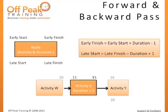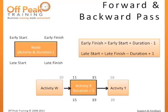Likewise, late start represents the latest an activity can start without affecting the planned project finish date. Late finish will be the end of the day prior to the earliest late start of its successors. In our example, the late finish of activity X's successor is the beginning of the 20th day, so activity X must be completed no later than the end of the 19th day. Late start can be calculated by subtracting the duration from the late finish and adding 1. In this example, we take 19 minus 5 and add 1, which gives us 15. Looking at activity X, the earliest it can possibly begin is the 10th day, but it can start as late as the 15th day without causing the schedule to overrun.